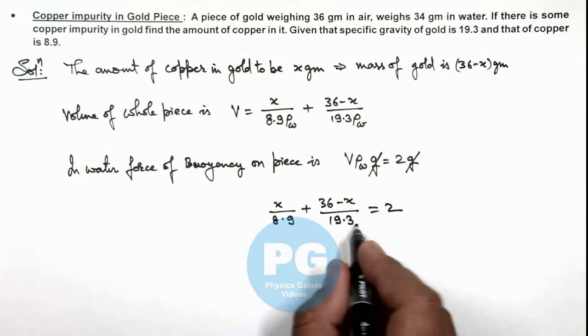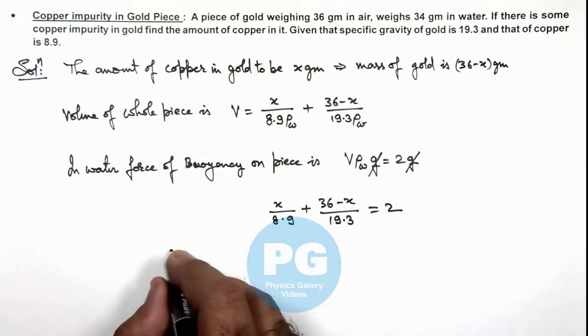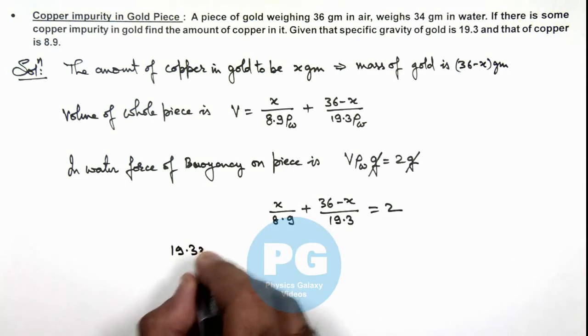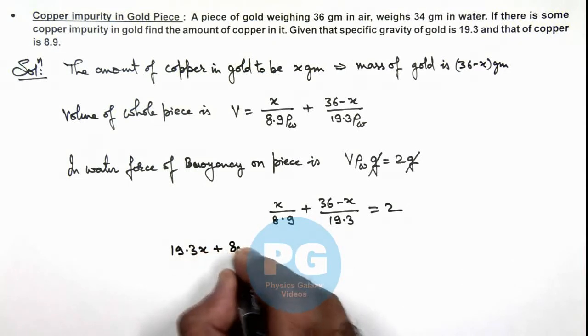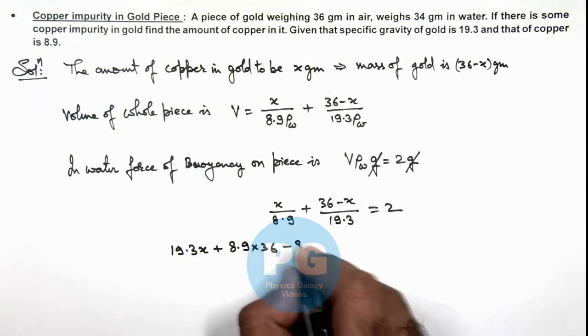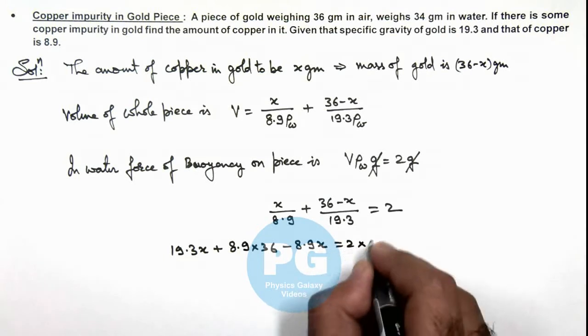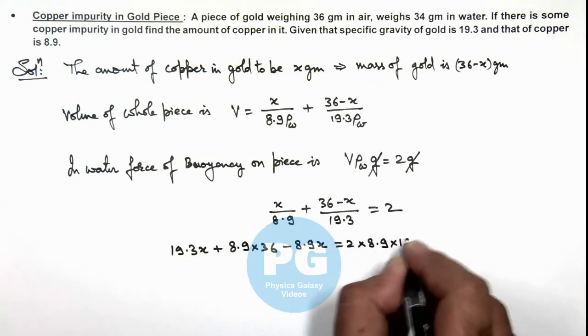And if we cross multiply and simplify, this relation gives us 19.3x plus 8.9 multiplied by 36 minus 8.9x is equal to 2 into 8.9 into 19.3.